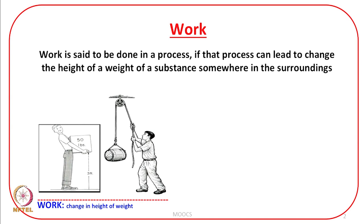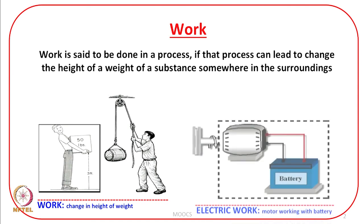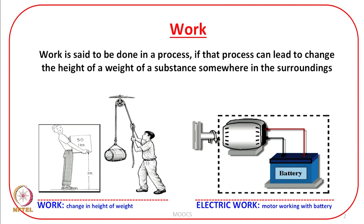This example I took in my previous lecture also — that a person who is lifting a weight, we can see that the height of that weight is changing in the surroundings. Then what about electrical work? The electrical work can also be connected with the change in height of a weight somewhere in the surroundings. For example, the electrical current produced can be passed through a motor connected to a pulley, and then the pulley can be connected to a weight, and we can see the height of a weight being changed in the surroundings.